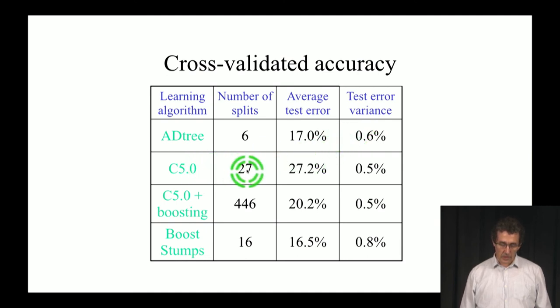C5.0 is much bigger, but much worse in performance. C5.0 plus boosting is even bigger than that and better than C5.0 by itself, but not as good as just AD trees. And then boosting stumps is actually slightly better than AD trees, but it requires more splits. So the two-level splitting is actually beneficial here. You see that this is another approach to how to build a decision tree or a combination of decision trees. And in some cases, at least, it works very well.